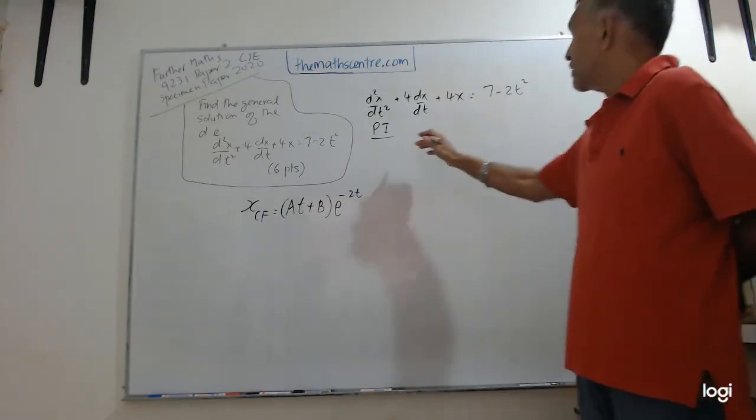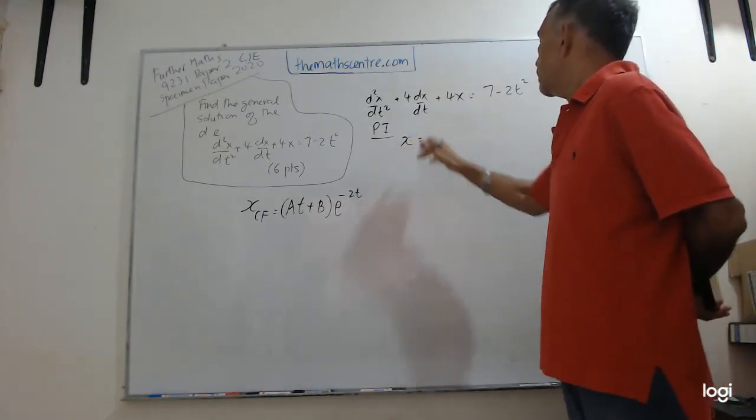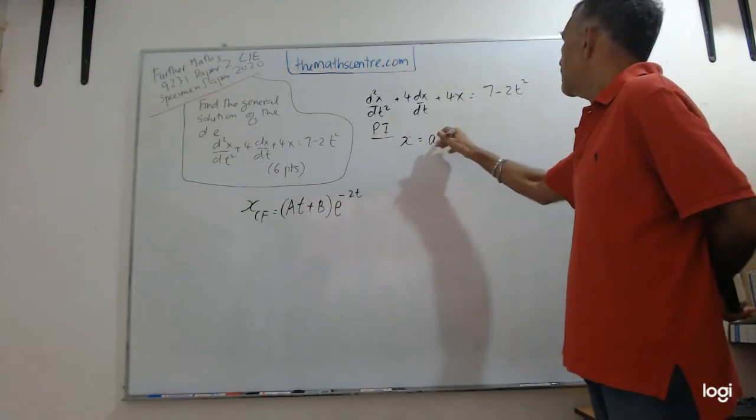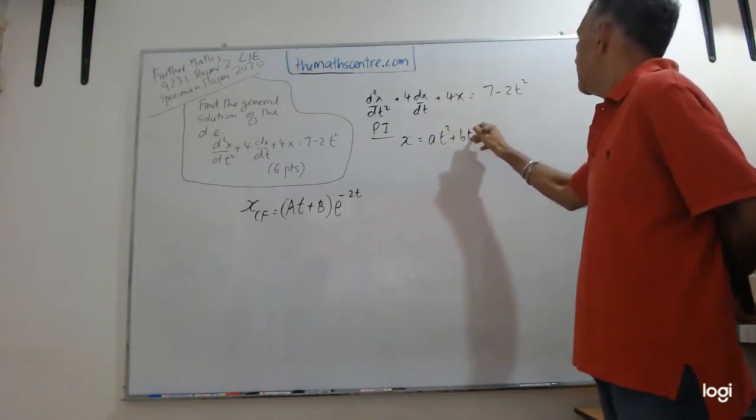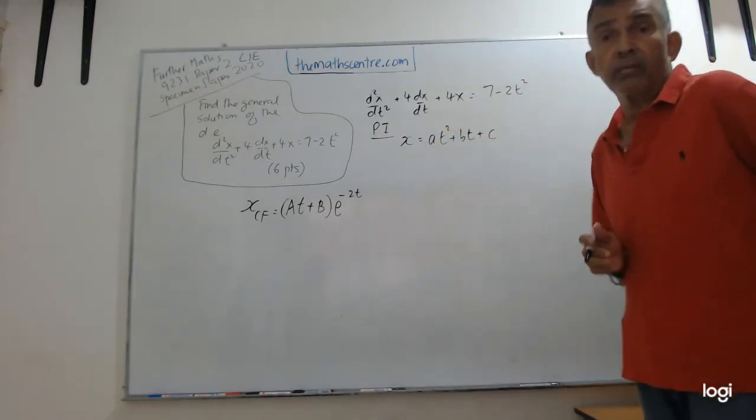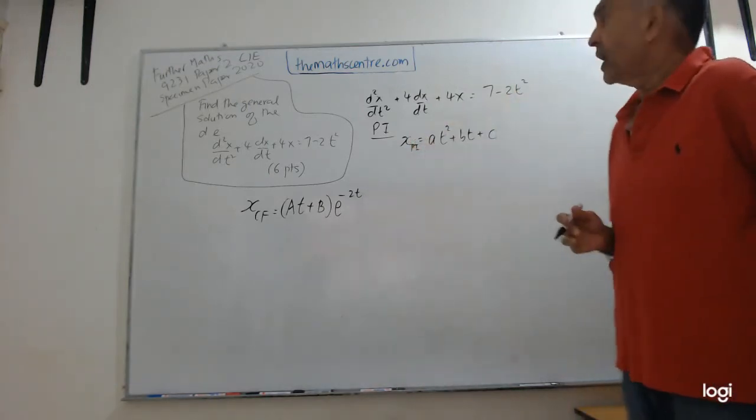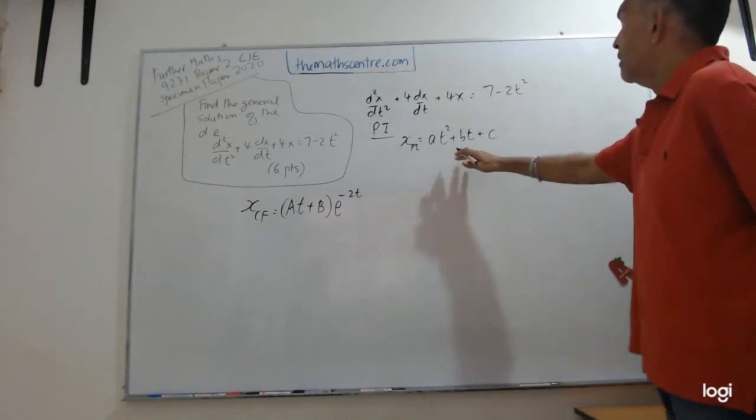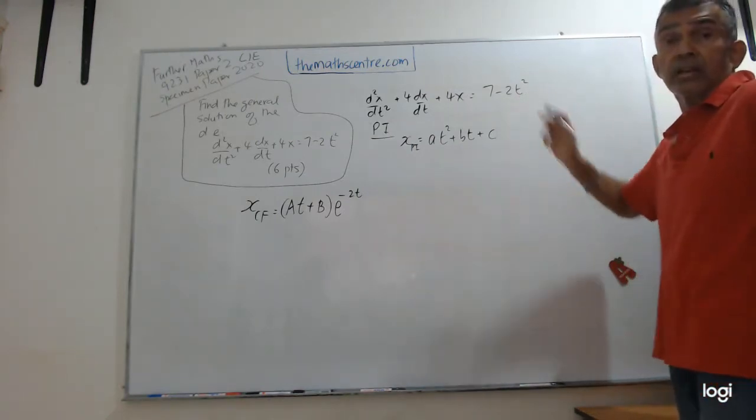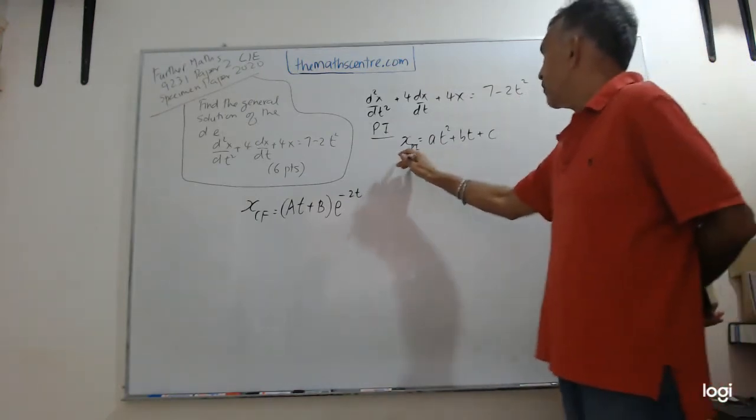We see that the right-hand side is a quadratic. So let's go ahead and write x = at² + bt + c. That's the particular integral we are choosing. We're choosing a quadratic because of the fact that the right-hand side is a quadratic function.